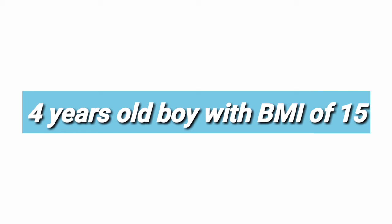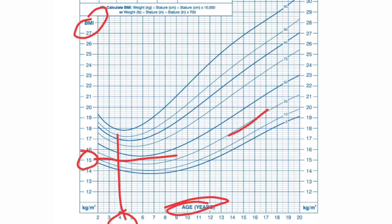For a BMI chart example: the boy is 4 years old and his BMI is 15. We plot age on the x-axis and BMI on the y-axis and follow the centile lines — it falls in the range of the 25th centile. The steps are: calculate BMI, select the appropriate chart, plot age on x-axis and BMI on y-axis, then follow the centile lines.